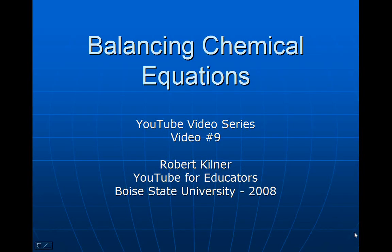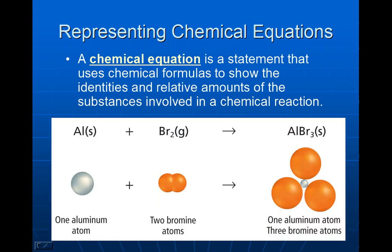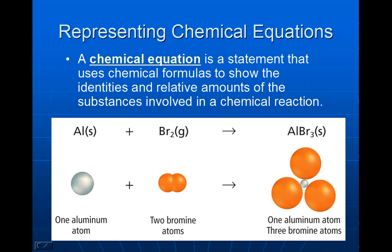This is YouTube video series video number nine on balancing chemical equations. A chemical equation is a statement that uses chemical formulas to show the identities and relative amounts of substances involved in a chemical reaction. Basically, I'm going to show what I put in and what I get out. In our example, I'm putting in one solid aluminum atom plus two gaseous bromine atoms and getting out one aluminum atom and three bromine atoms in the form of solid aluminum bromide.